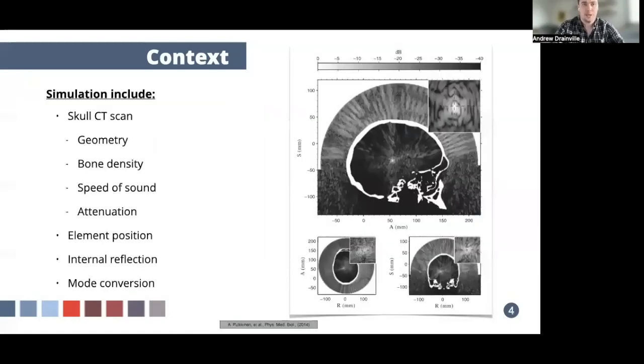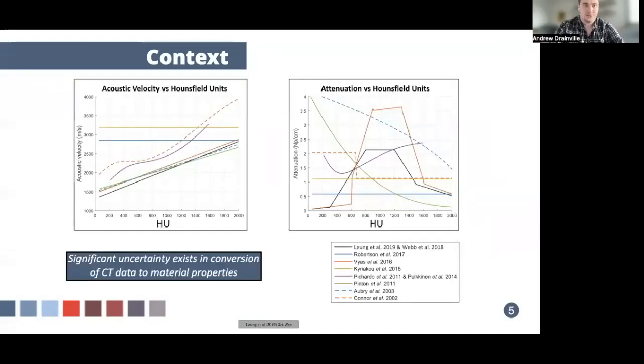Skull material properties are most commonly estimated using CT scans, which provide both detailed information on the shape of the skull as well as measurements of bone density, which can then be used to estimate acoustic properties of the skull, including the speed of sound and the attenuation. A problem, which is illustrated in the figure on the left, is that there are many different published conversion algorithms to estimate the speed of sound, and they don't all agree with each other. There's even less agreement on how best to derive attenuation properties from CT data, and it's important to know how uncertainty in these properties can affect transcranial focusing.